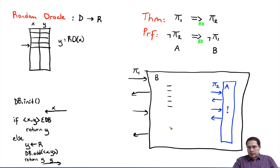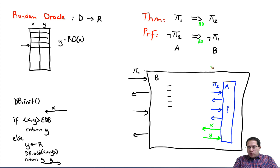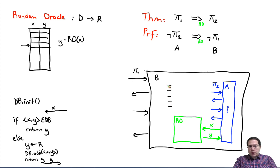In the random oracle model, in addition to playing the game for scheme pi2, adversary A also has access to random oracle queries. A sends some query x to the random oracle and expects an answer y — this oracle access can occur anywhere within the game. Furthermore, B must also write the code for the random oracle; B's job is to simulate this random oracle.